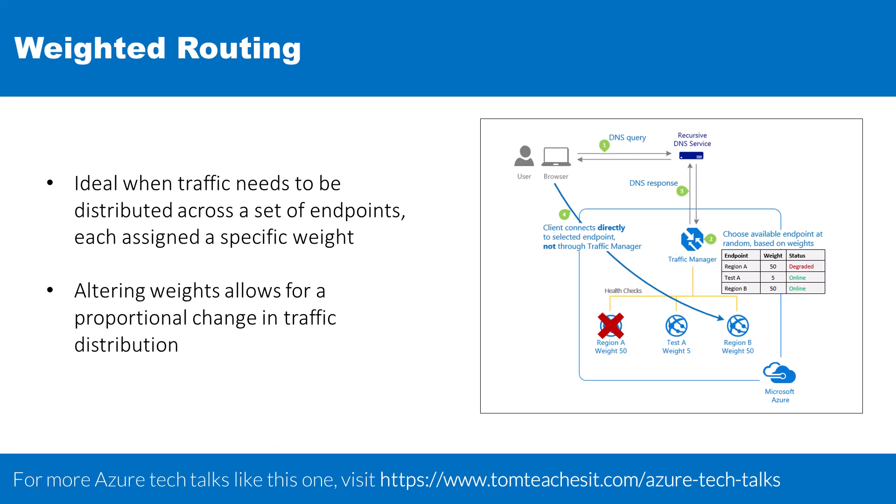Next is the weighted routing method. This method is ideal for scenarios where traffic needs to be distributed across a set of endpoints, each assigned a specific weight. The distribution of traffic is based on these weights, with equal weights leading to an even distribution across all endpoints. Altering these weights allows for a proportional change in traffic distribution, giving administrators finer control over traffic flow.